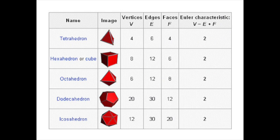Euler was also involved in another early breakthrough in topology: his discovery of what became known as the Euler characteristic, which applies to flat-sided shapes, or what we call polyhedra. You add up the number of corners (vertices) and faces, then subtract the number of edges, and that gives you the Euler characteristic. For all regular polyhedra — like the five Platonic solids — the Euler characteristic is always two, making them topologically equivalent to a sphere. In fact, you could take a cube and mold it into a sphere.